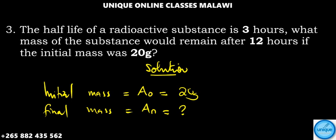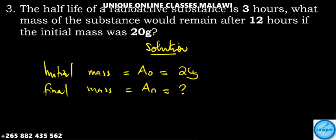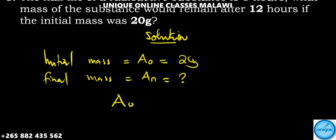The formula we'll use is: A₀ divided by Aₙ equals 2 to the power n, where n is the number of half-lives.